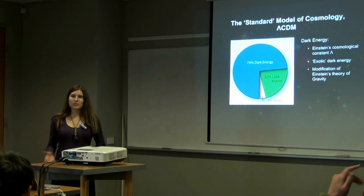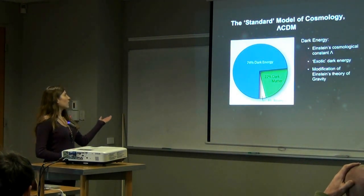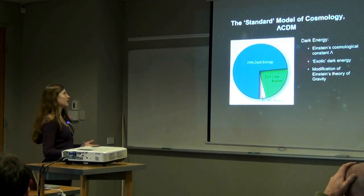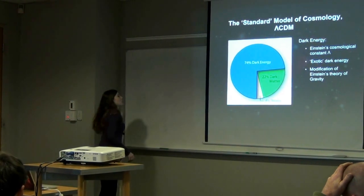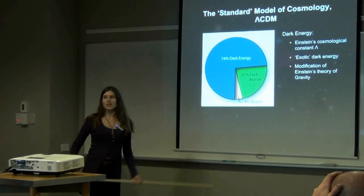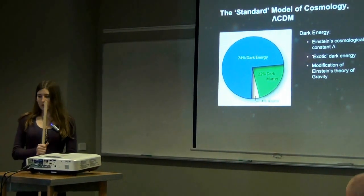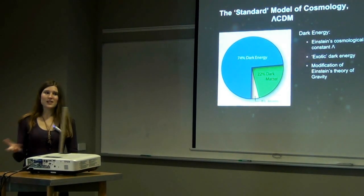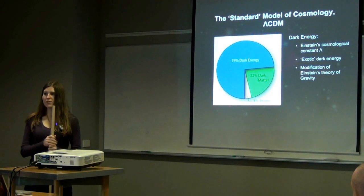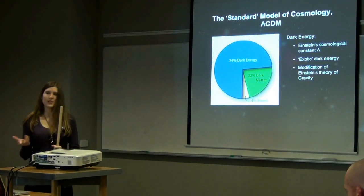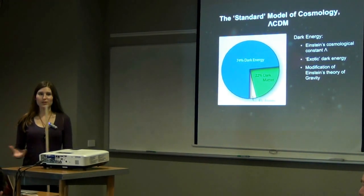We have a standard model of cosmology known as Lambda CDM. This is a pie chart of what we understand the contents of the universe to be in Lambda CDM. Observations show us that about three quarters of the universe is made up of something called dark energy, which is whatever is causing the universe to accelerate. Last year the Nobel Prize in Physics went to the discoverers of the accelerated expansion, showing how important this discovery is. One of the main goals of cosmology is to try to work out what dark energy is.